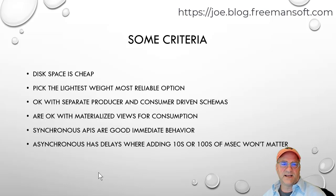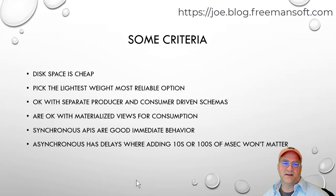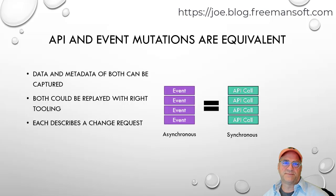Synchronous APIs are good for immediate behavior, and if we don't care about the immediate behavior, then asynchronous delays are good. API and event mutations are equivalent. Sometimes we'll do an asynchronous API piece, then do an asynchronous update, and the asynchronous updates just come in through the synchronous updates.